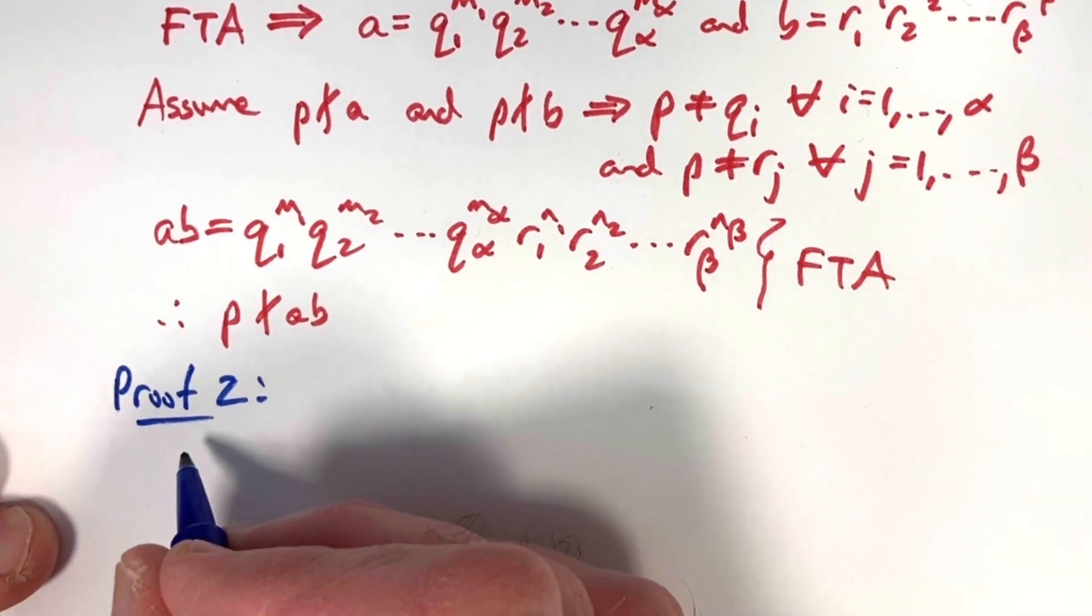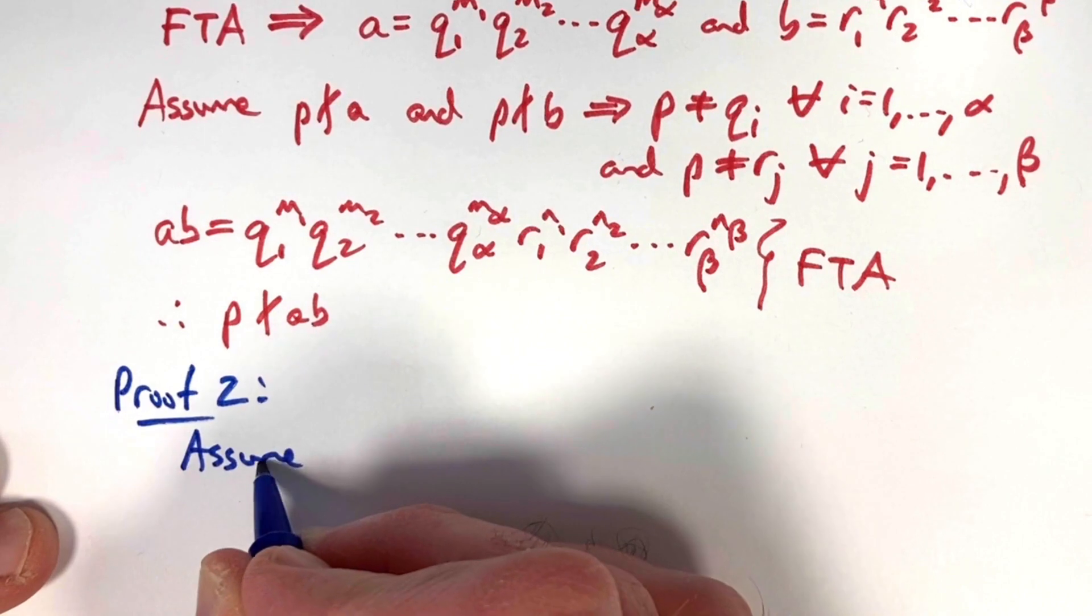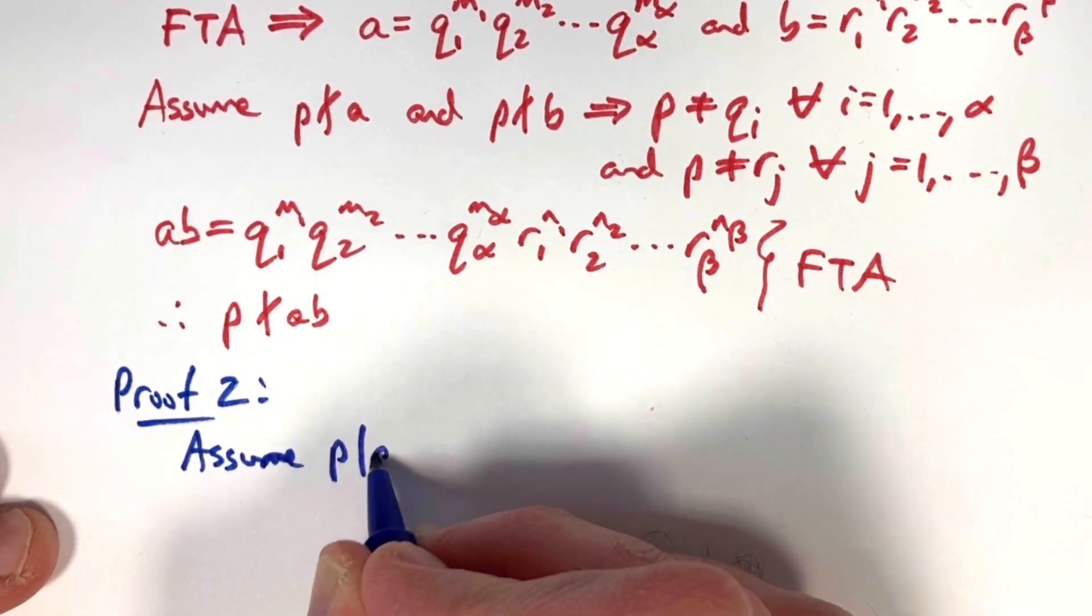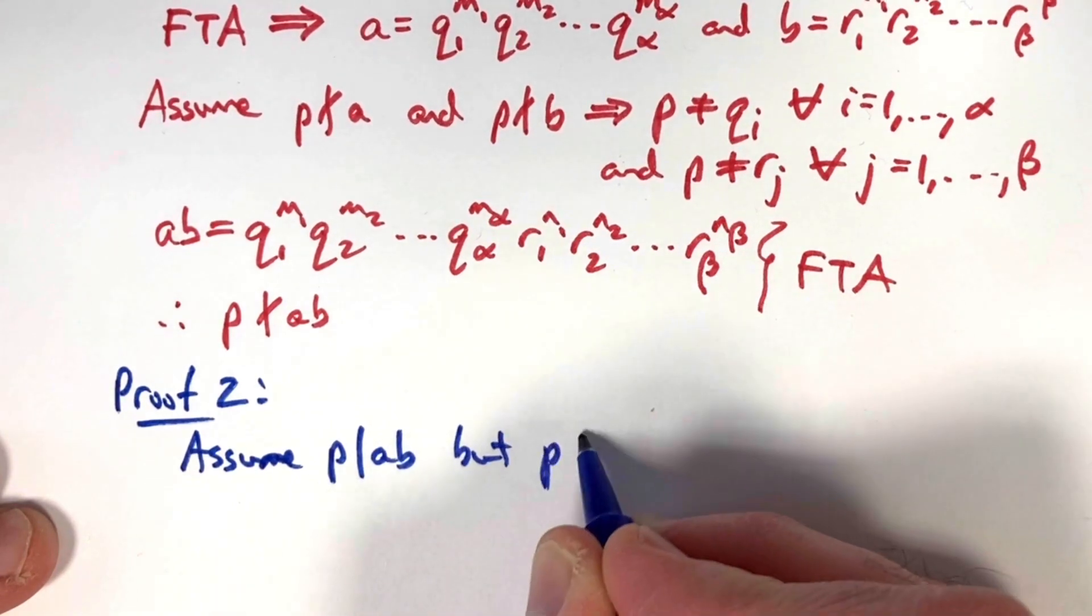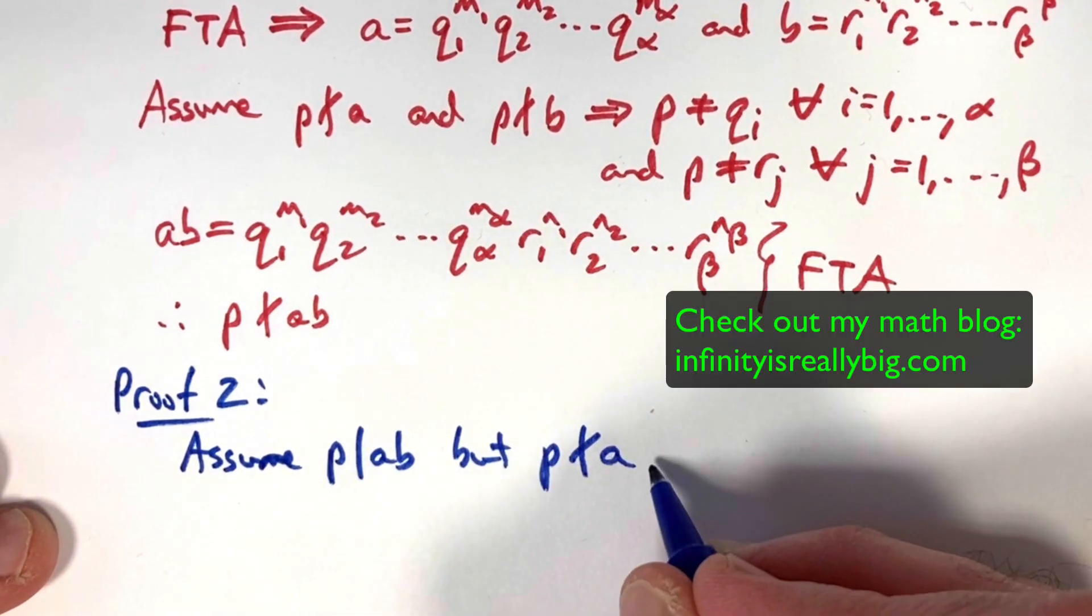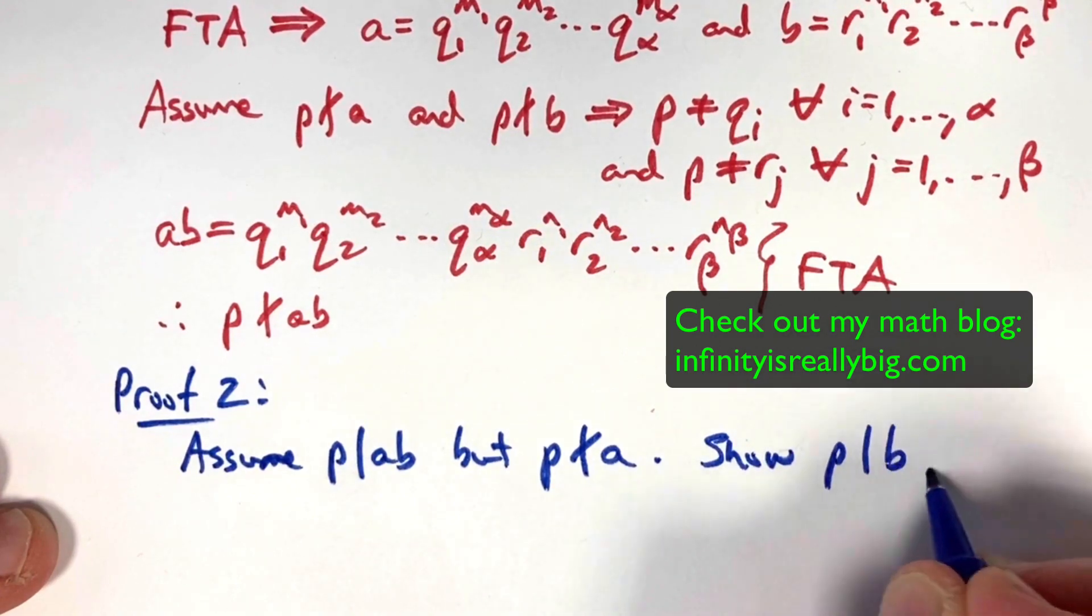So we go ahead and say, assume, again, we have the background assumption that p is prime, that p does divide a times b, but p does not divide a. We must show that p does divide b.